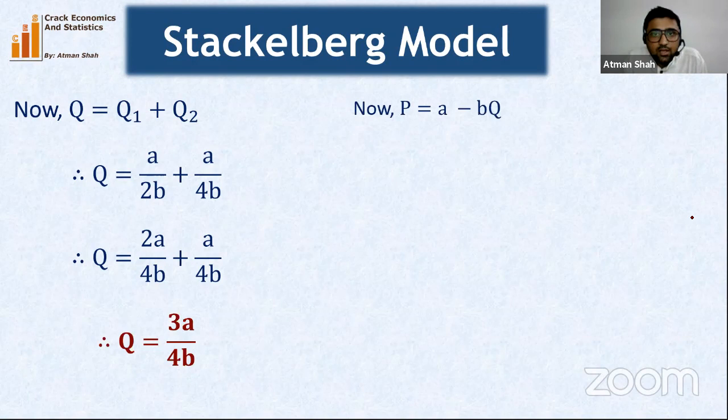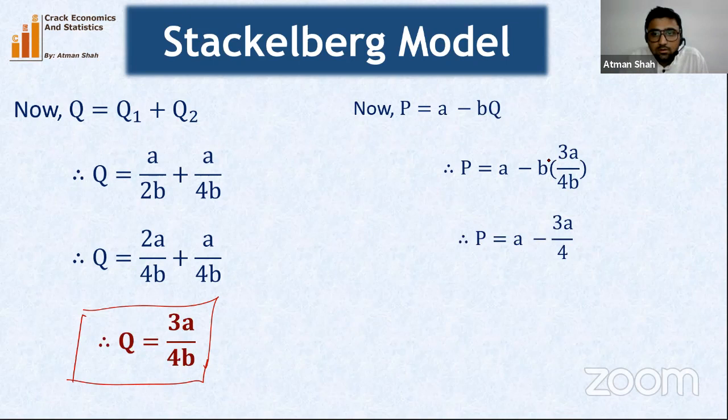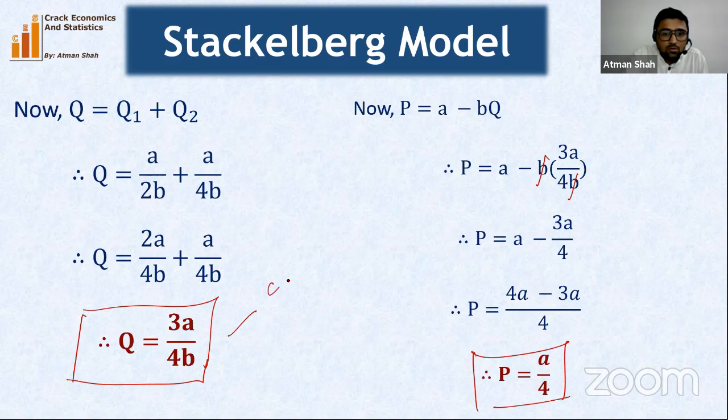Substituting Q = 3a/4b into the demand equation: P = a − b·(3a/4b) = a − 3a/4 = a/4. So the equilibrium price in the Stackelberg model is P = a/4, and equilibrium quantity is Q = 3a/4b.